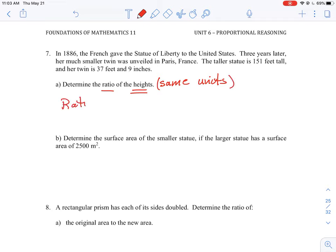If we want to do this ratio correctly, it doesn't matter whether we do large to small or small to large. We can just do large over small, you can just pick an order. So the taller statue or the large one is 151 feet.